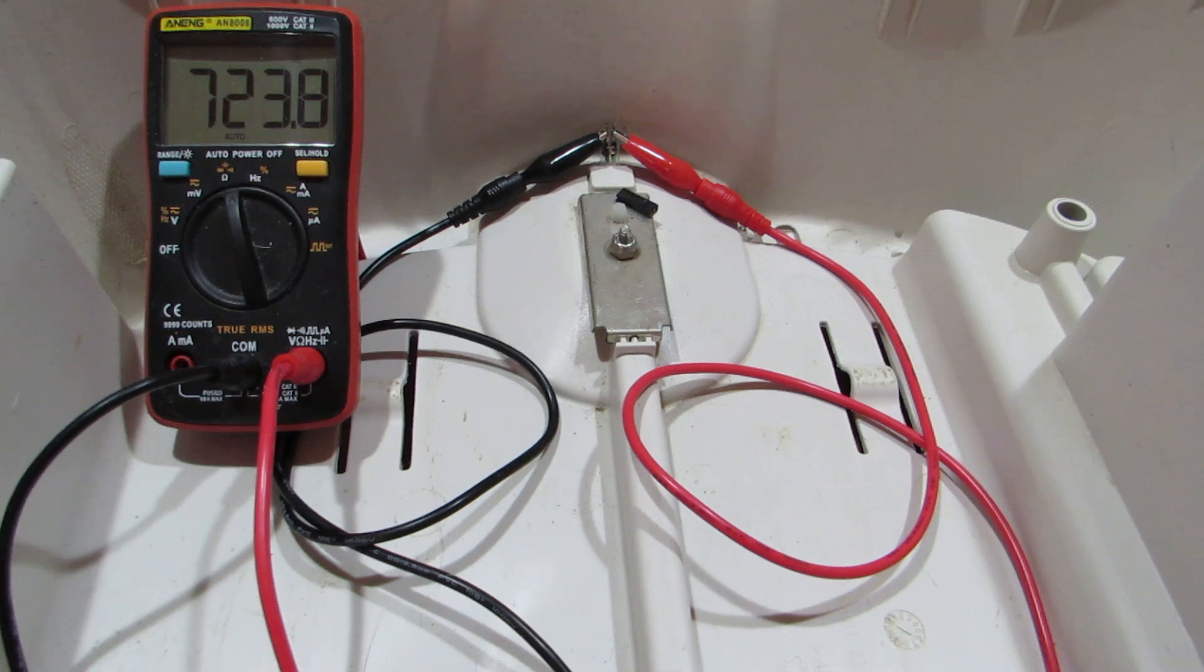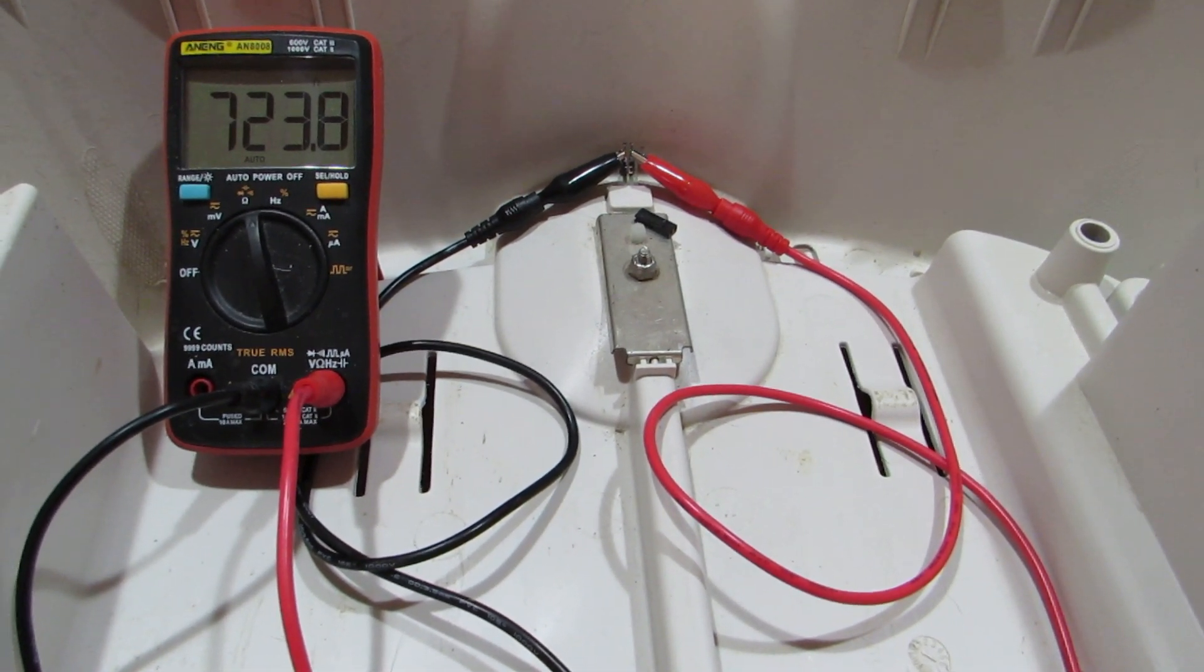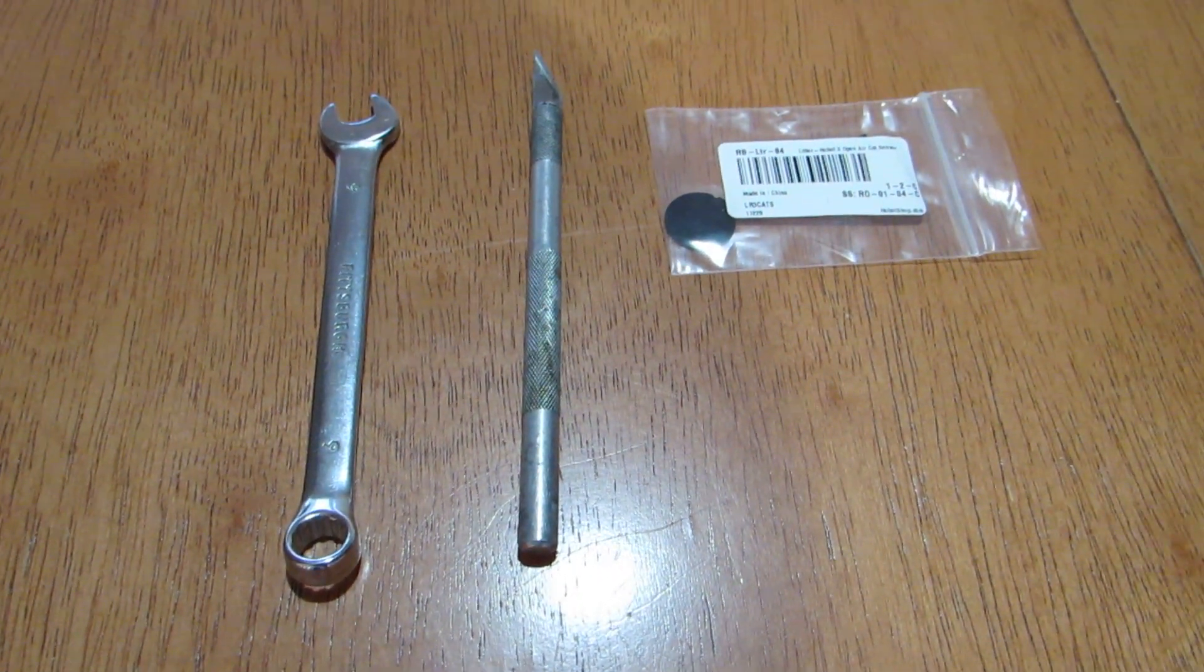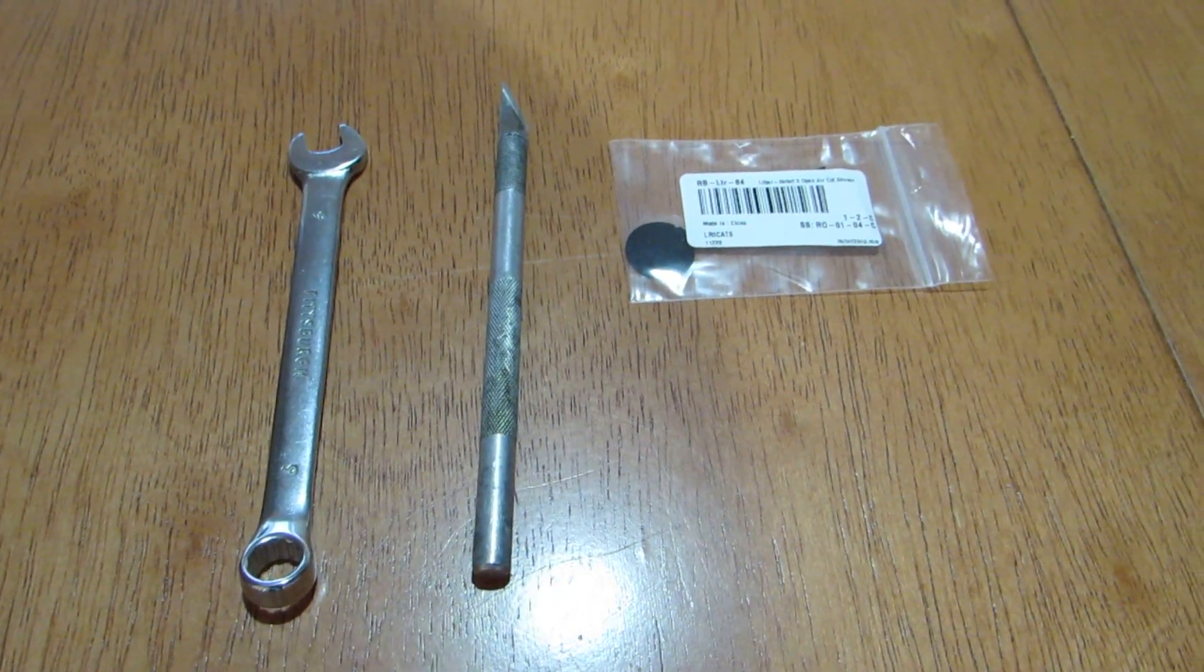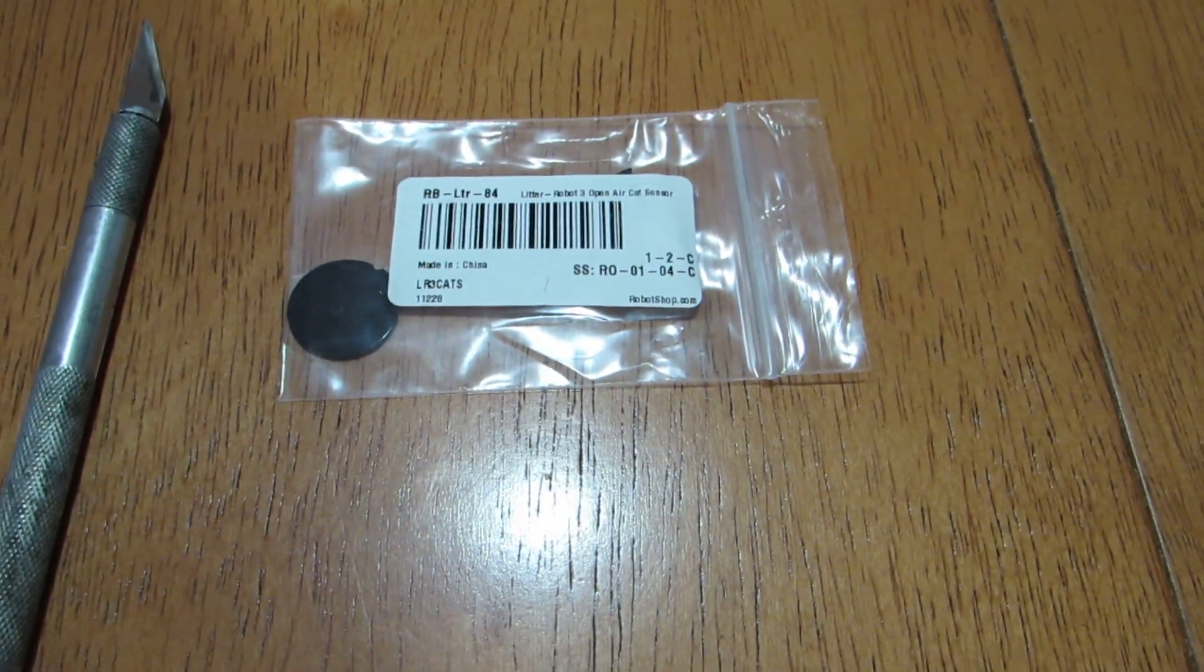The tools that you will need to perform this task are the voltmeter as you see connected to the weight sensor, a 9mm wrench, an awl or exacto blade or equivalent for poking, and of course your replacement weight sensor.